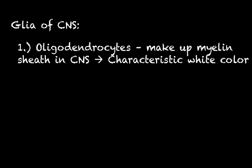As for the glia of the central nervous system, first you have oligodendrocytes, which serve a very similar function to Schwann cells — they make up the myelin sheath in the central nervous system. One major difference is that oligodendrocyte myelin gives off a characteristic white color, which will become important when we start making distinctions between white matter and gray matter in the central nervous system.